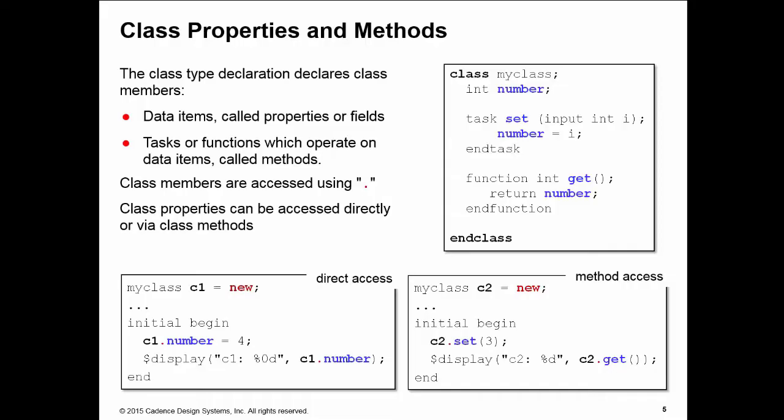If I have methods declared to access the property I can also use those methods. In a second example, method access, I'm calling the set method of the C2 instance of my class to assign number equal to 3, and I call the get method to retrieve the value of number for the dollar display line.